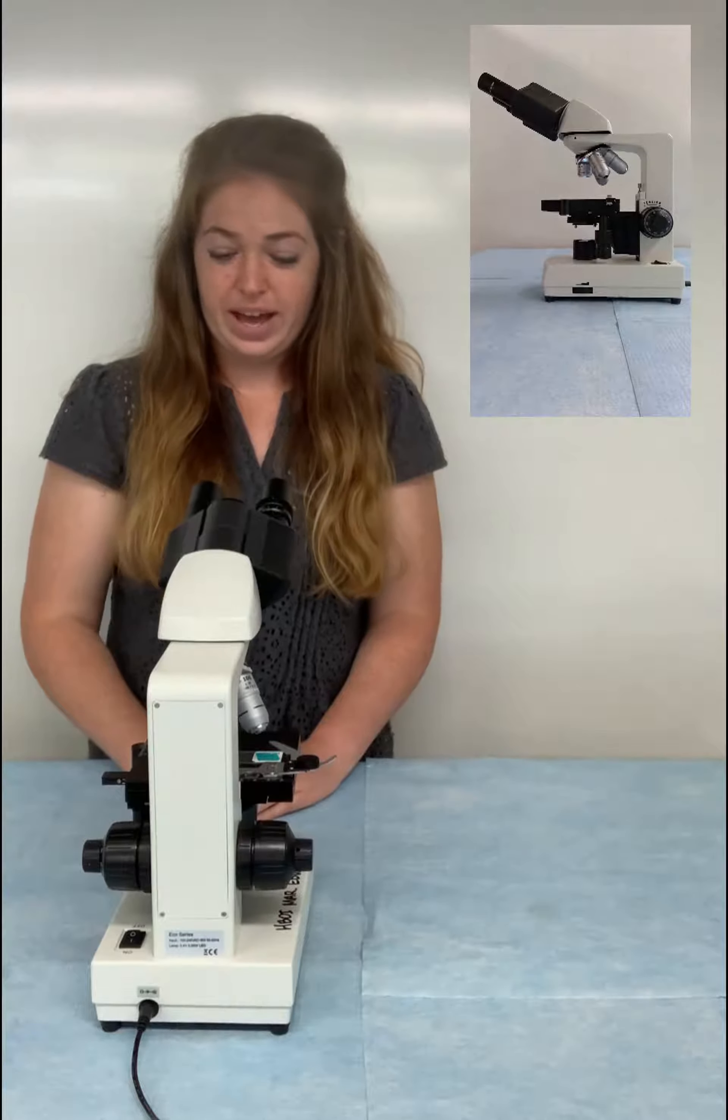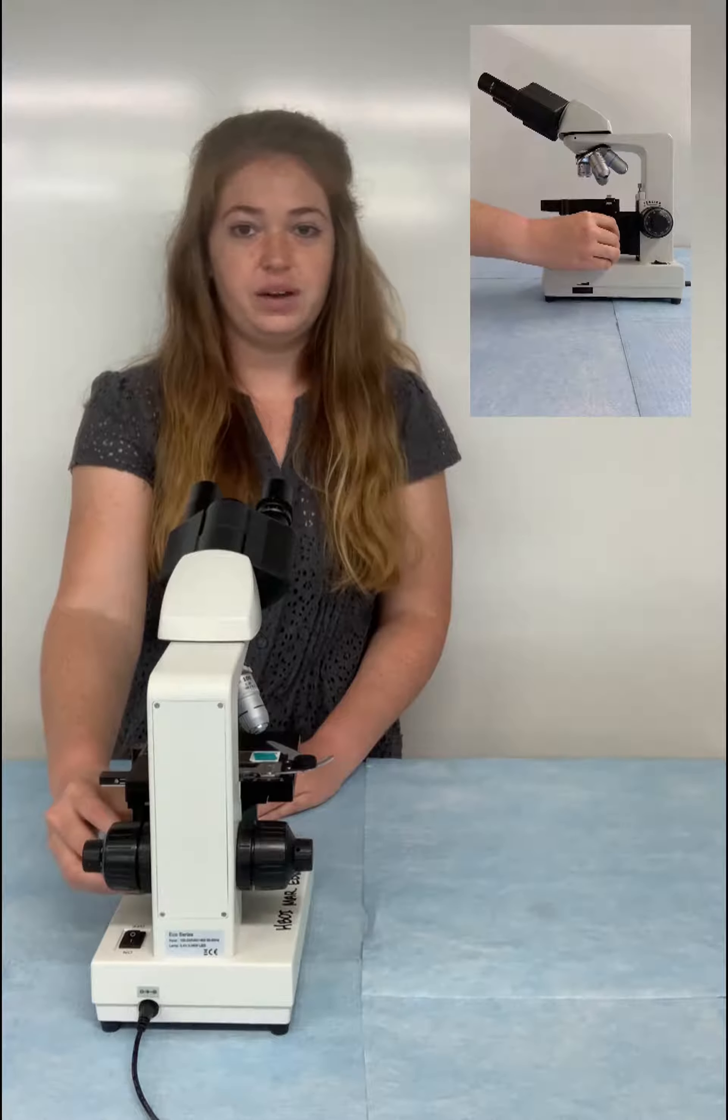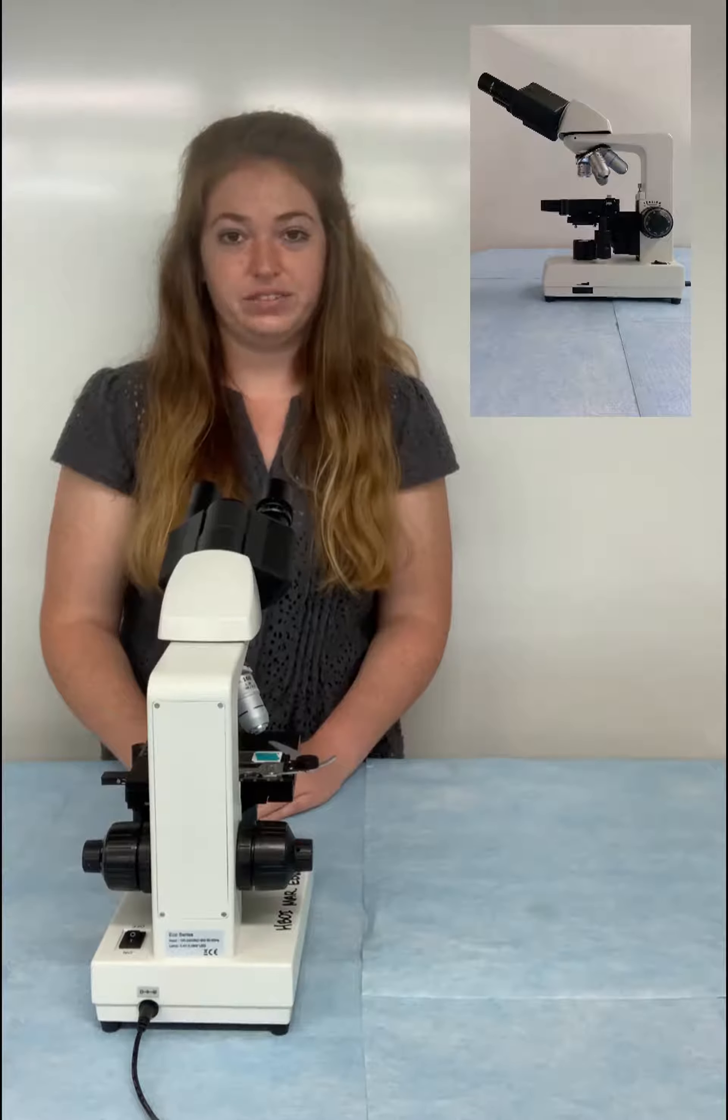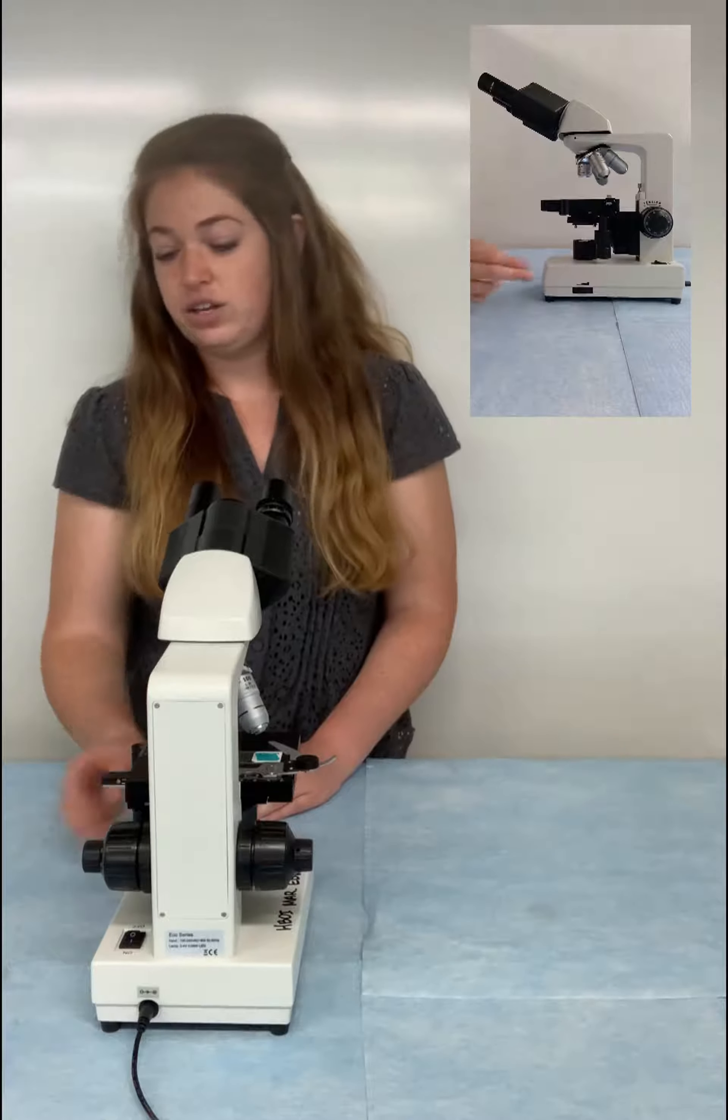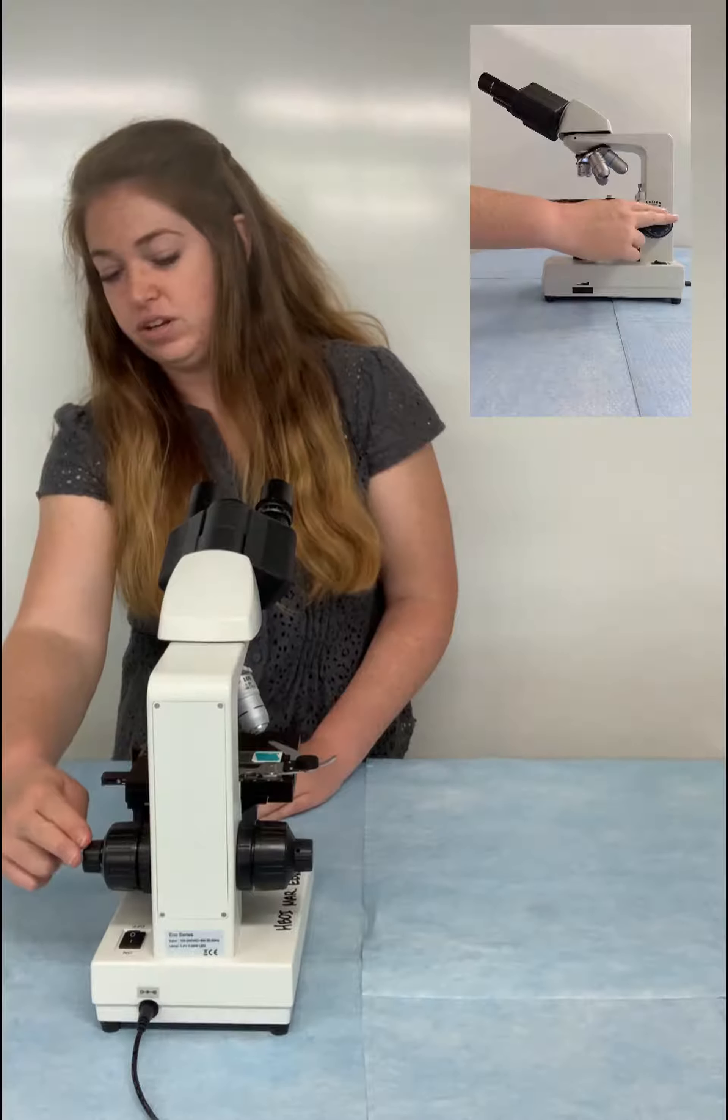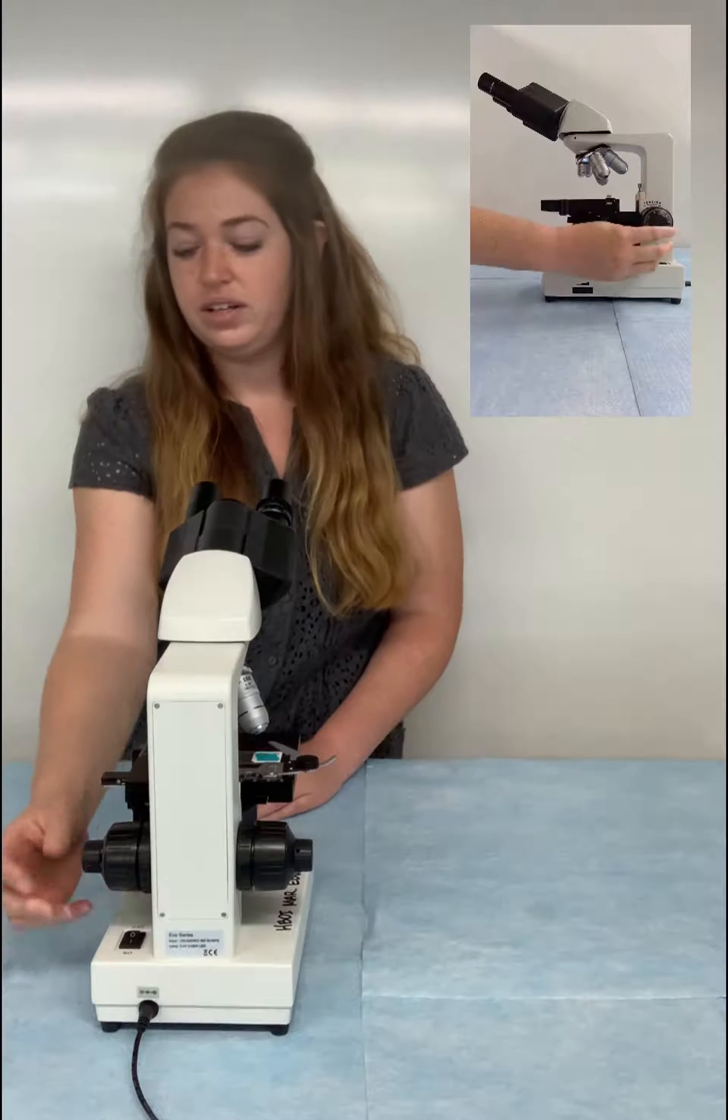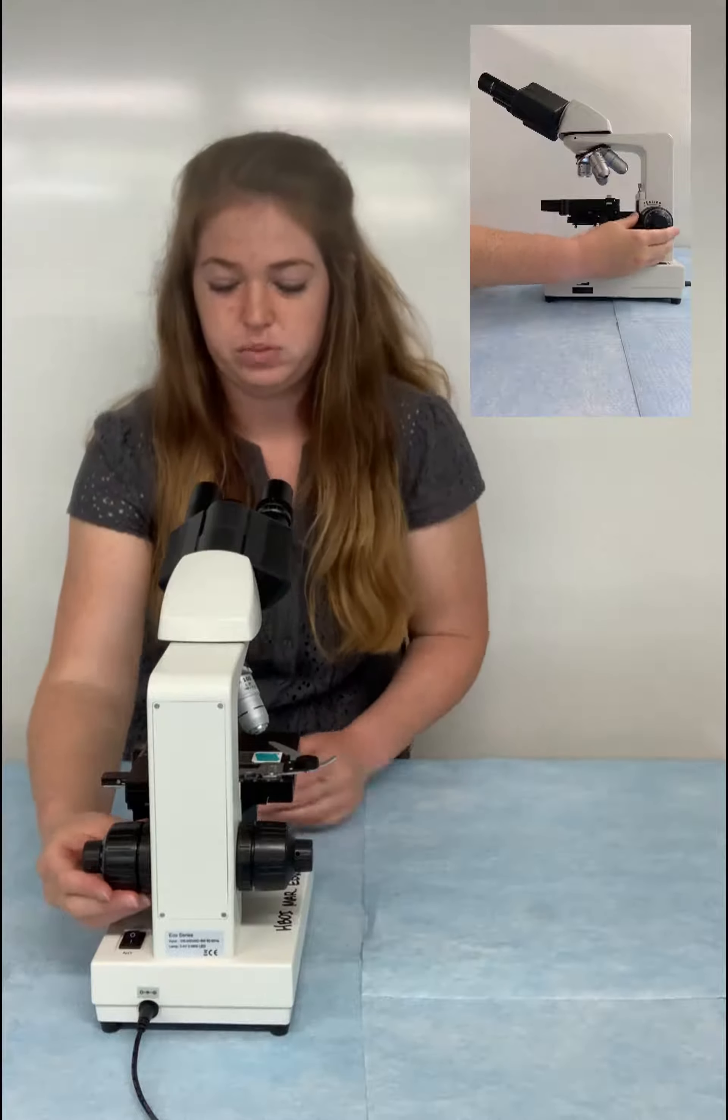Once you have your slide clipped in and you're familiar with the knobs that allow you to move the slide, you're ready to adjust your magnification so you can actually see what's under the scope. For that you have two knobs here. This big knob is called the coarse adjustment and this is the fine adjustment. You want to start off with the big knob, the coarse adjustment.